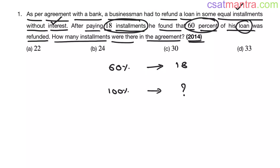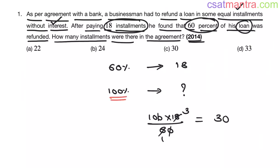How many installments? That is 100 multiplied by 18 divided by 60. The zeros cancel out. 6 ones are 6, 6 threes are 18 — this gives us 30.